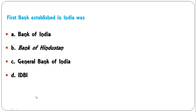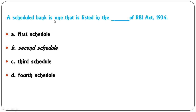The first bank established in India was Bank of India, Bank of Hindustan, General Bank of India, or IDBI? It is Bank of Hindustan. A scheduled bank is one that is listed in the second schedule of the RBI Act 1934, so B is the correct answer.